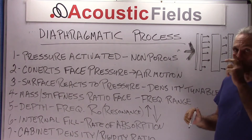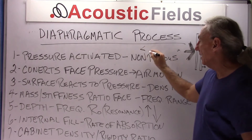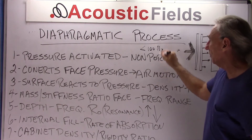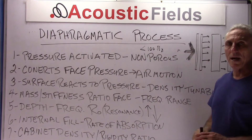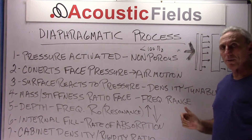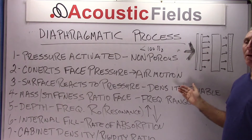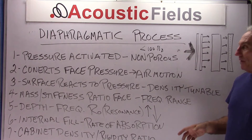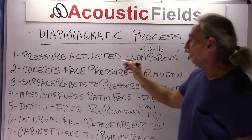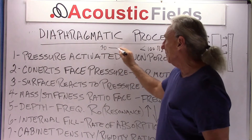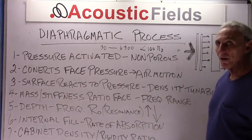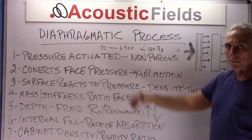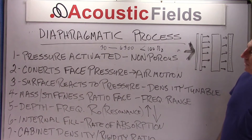So what is pressure? We know from past videos that pressure is any frequency less than 100 cycles. So it's really a low frequency technology. If it has enough horsepower like ours does, you can obviously make it broadband. We take diaphragmatic absorption and add our foam technology to the face, so with our diaphragmatic absorbers you can get coverage from 30 up to 6,300 cycles — very broadband if you need it.